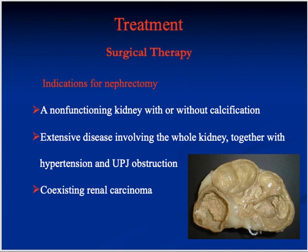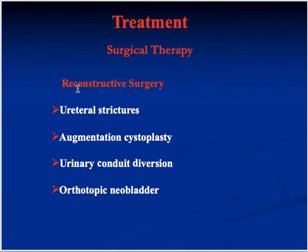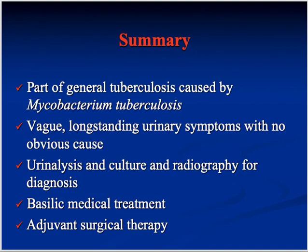Indications for nephrectomy include non-functioning kidney with or without calcification, extensive disease involving the whole kidney with hypertension, pelvi-ureteric junction obstruction, or coexisting renal carcinoma. Reconstructive surgery may be done for ureteral strictures, augmentation cystoplasty, urinary diversion, or creation of a new bladder. That covers urological tuberculosis — easy to understand because we know the fundamentals of tuberculosis from before.